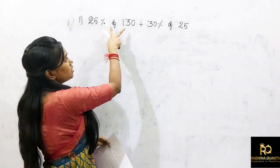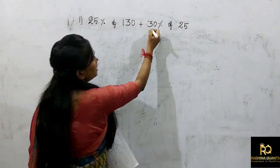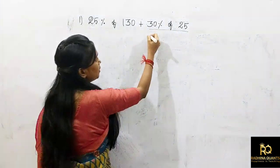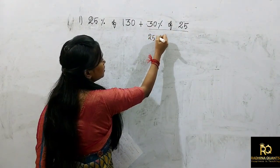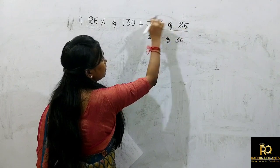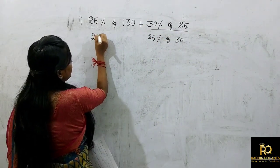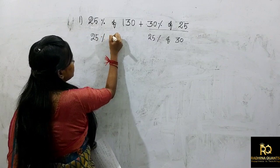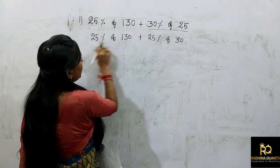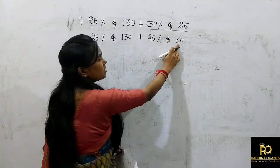In the first part, there is 25% of 130. If you use the interchanging technique, you change 25% of 30. So 25 and 30 — in the first part there is 25% of 130, and now 25% of 30.